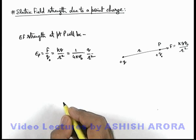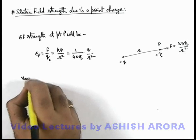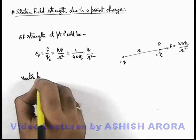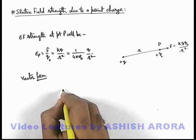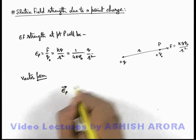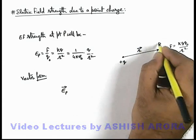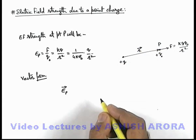Now in this situation, we can also write the vector form of electric field. In its vector form, we can write E⃗ₚ in terms of the position vector of the location where we wish to find the electric field.